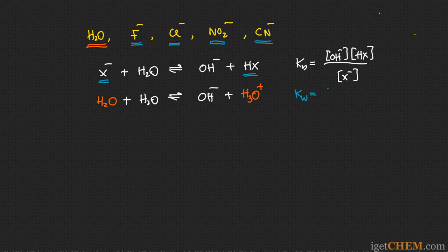For this reaction, the equilibrium constant equals [OH-] times [H3O+], and both reactants are H2O which don't appear in Kb. So the equilibrium constant for this particular reaction is just what we call Kw — the equilibrium constant for the auto-ionization of water, which is 10^-14. So the Kb for H2O is just Kw = 10^-14, and we don't have to look that up.